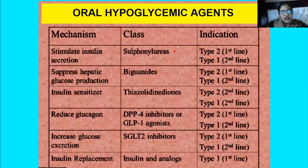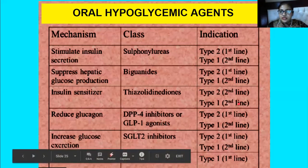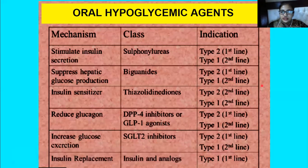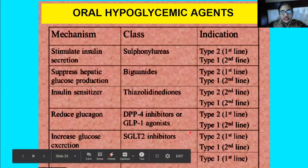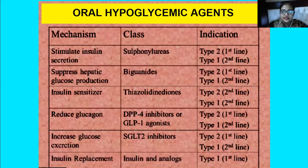This is a chart I have inserted here so that you will know what kind of medication is available and what kind of mechanism of action it has. We are going to discuss the sulfonylureas, then the biguanides, then thiazolidinediones, then DPP-4 inhibitors or GLP-1 agonists, then SGLT2 inhibitors, and then insulin and its analogs.